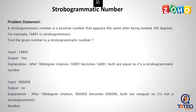A Strobogrammatic Number is a positive number that appears the same after being rotated 180 degrees. So, one number is 180 degrees — if you look at the number, it's the same number. That's a Strobogrammatic Number. So, 1, 6, 8, 9, 0 — we have 1, 6, 9, 6, 8 — if you look at the number, we have to use the same number. It's a Strobogrammatic Number.